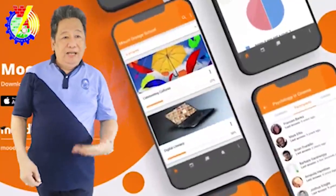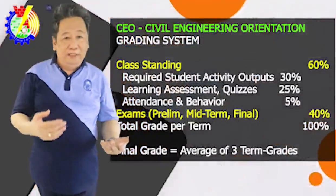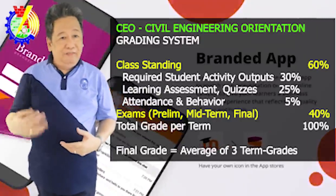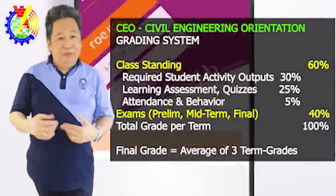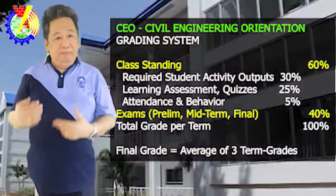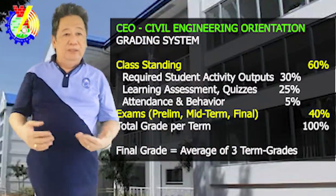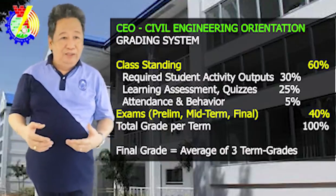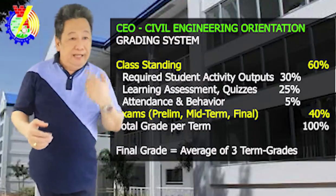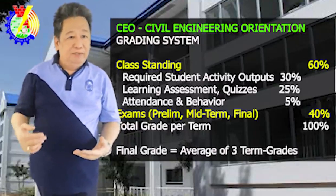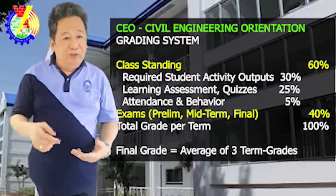How will I grade you? The grading system: class standing is 60% and long examination is 40%. The 60% is divided into required student activity outputs at 30%, learning assessment quizzes at 25%, and attendance and behavior at 5%. If you miss the required student outputs or learning assessment quizzes and are not able to submit with the rest, you can hardly pass this course. So please be diligent. The total grade covers prelims, midterms, and finals, and the final grade is the average of all three terms.